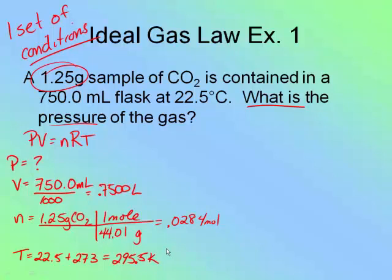Plug everything into the formula. P is what I'm solving for. My V is 0.7500. My N is 0.0284. My R is 0.0821, because that's always going to be the same value. And my T is 295.5.